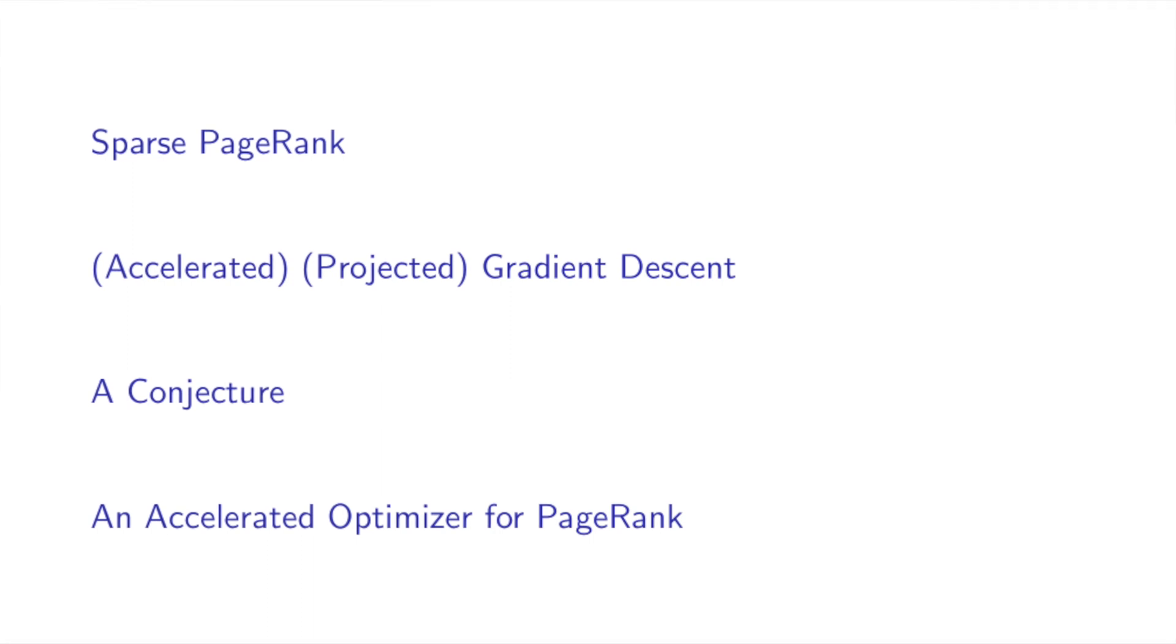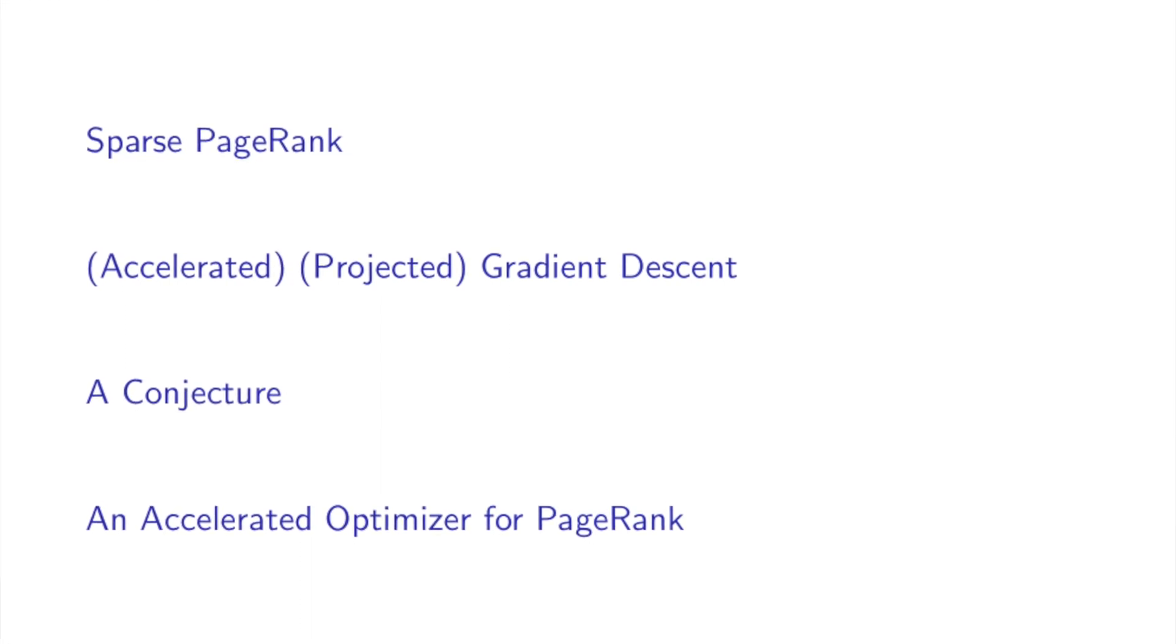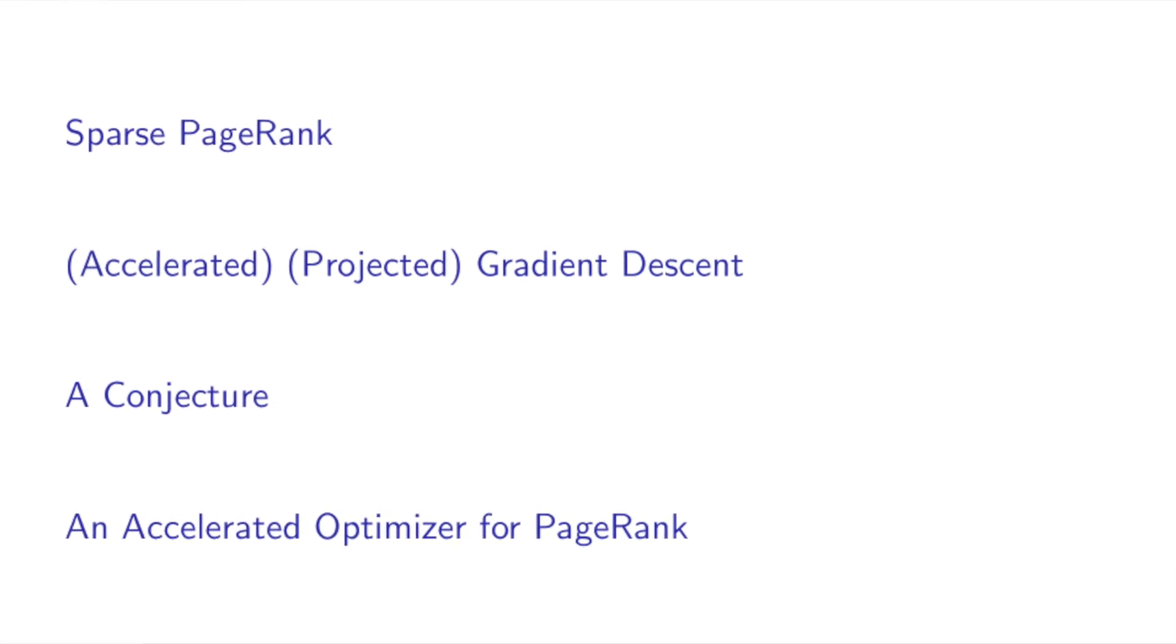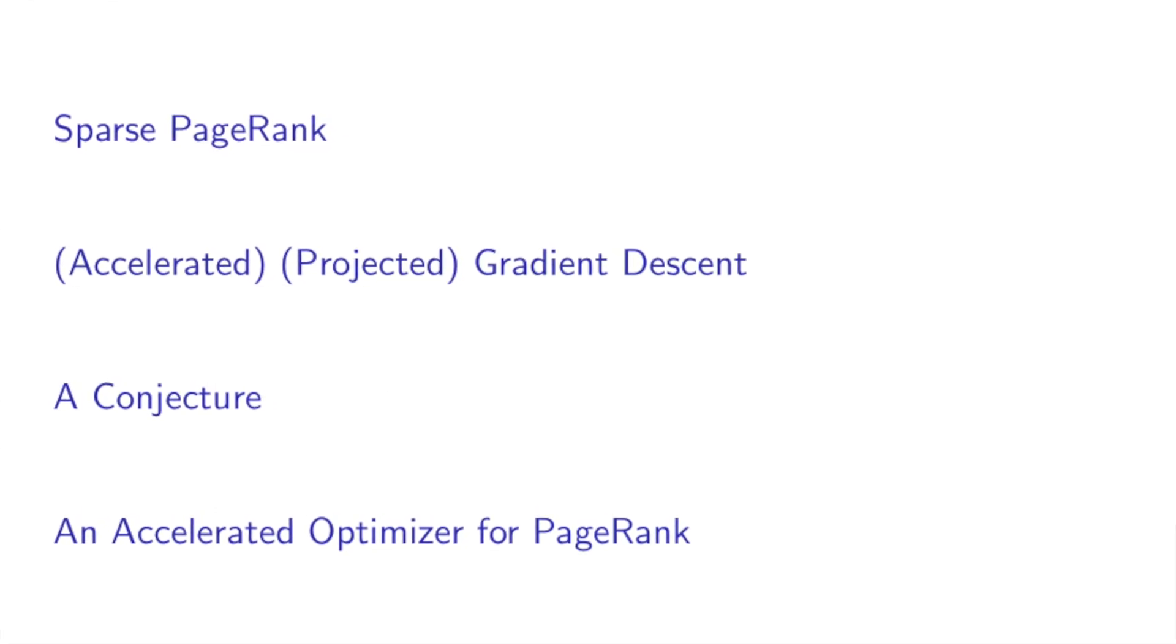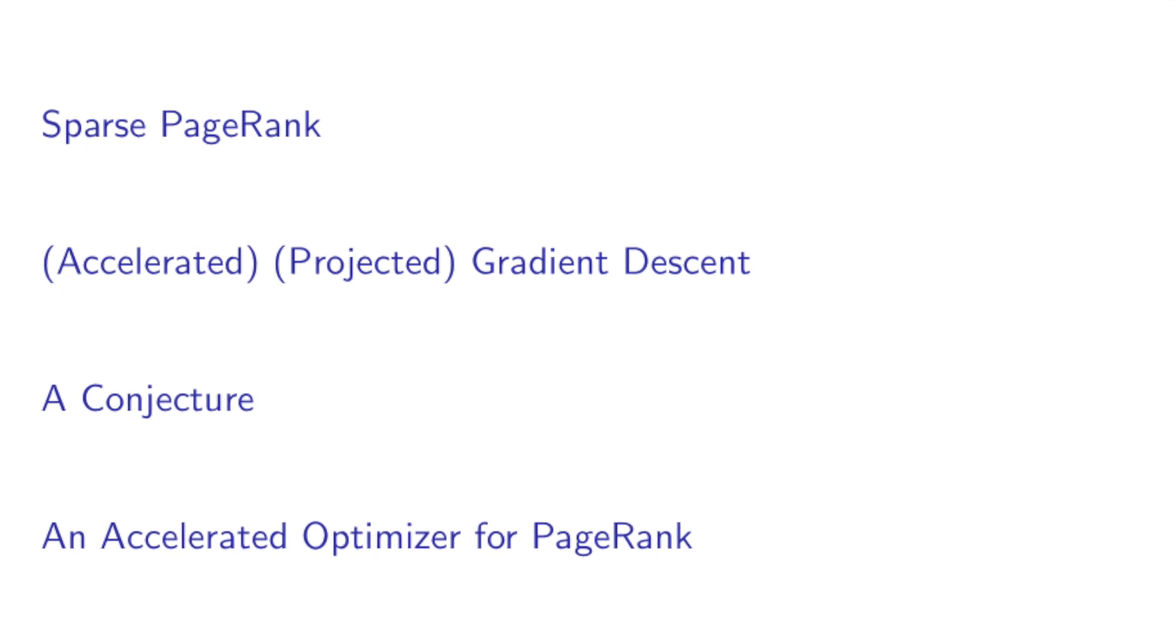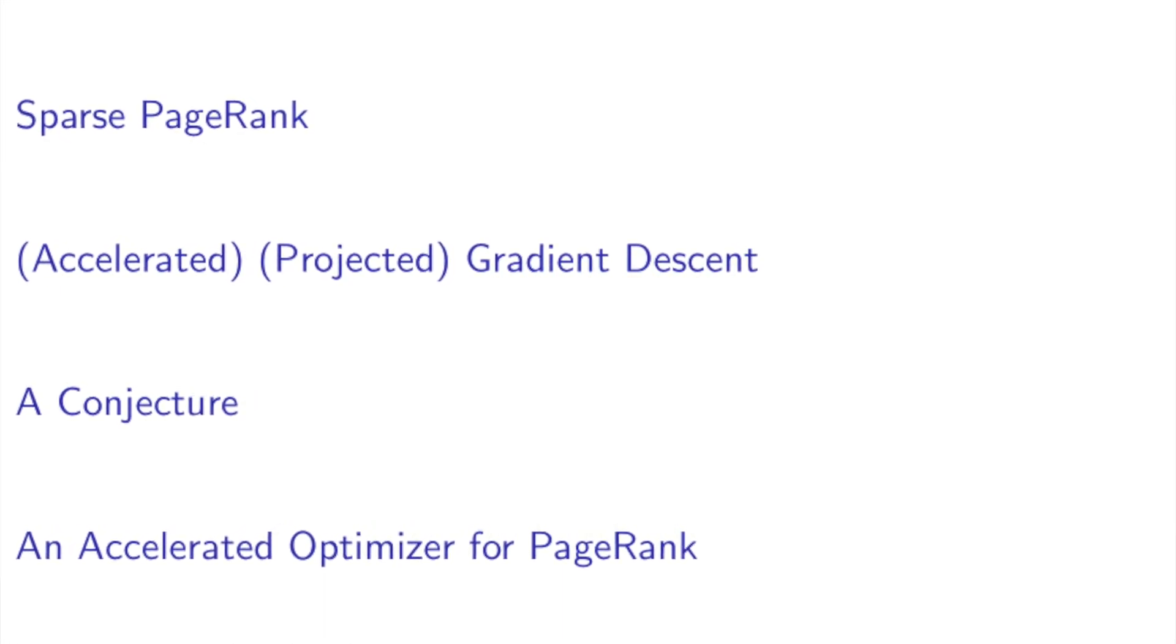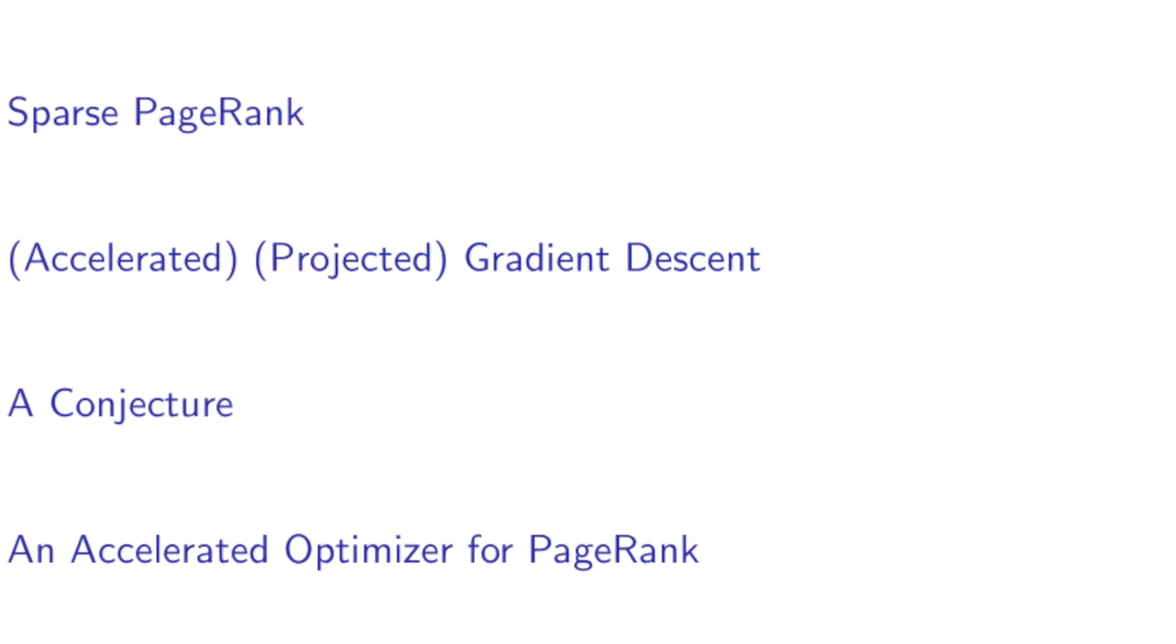In today's video, I will first introduce the Sparse PageRank problem. Then I will give a quick background on the most popular machine learning algorithm, gradient descent, and its projective and accelerated variants. Next, we will see the conjecture solved by today's paper. Finally, I will present the paper's algorithm which solves the conjecture. Let's jump in.